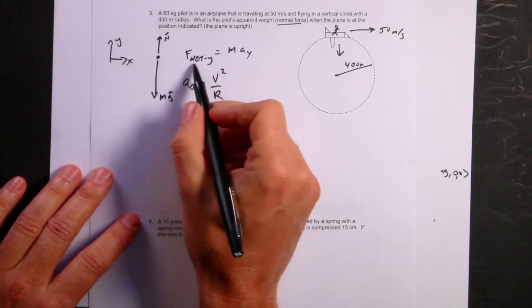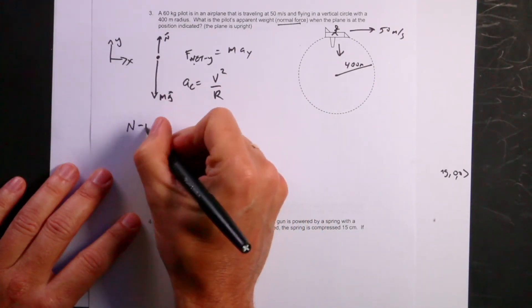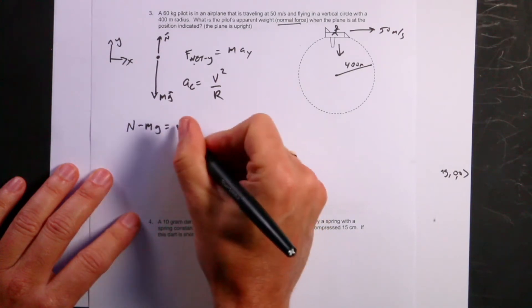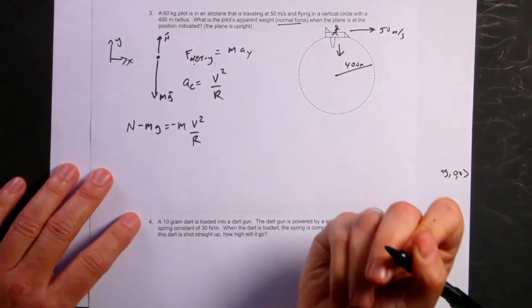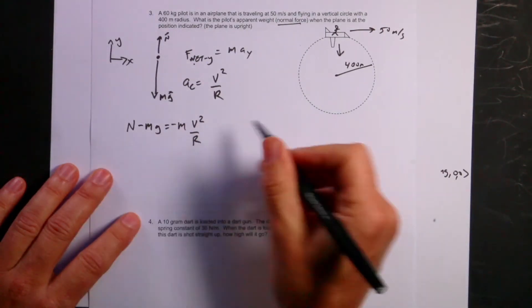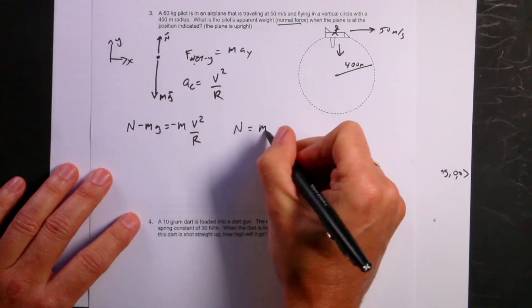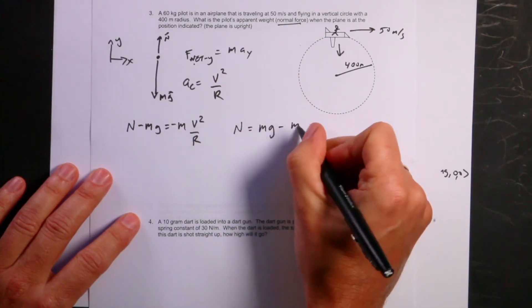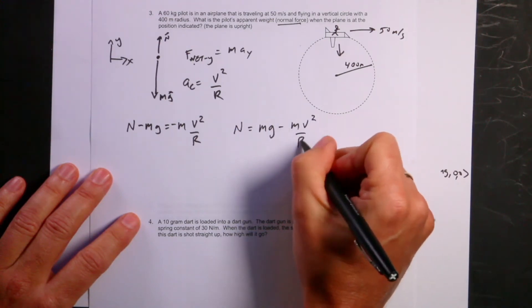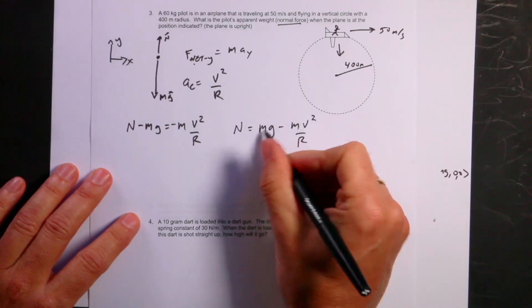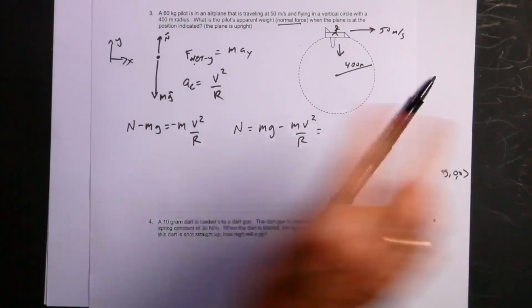So let's put in what we have, the net force in the y direction I have n. Then I have minus mg. And that's going to equal m negative v squared over r. And what do I want to solve for? I want to solve for n. So let's say n, I'll just add mg to both sides, mg minus m v squared over r. I know m, I know g, I know v squared, I know r, so I just need to put in my values.